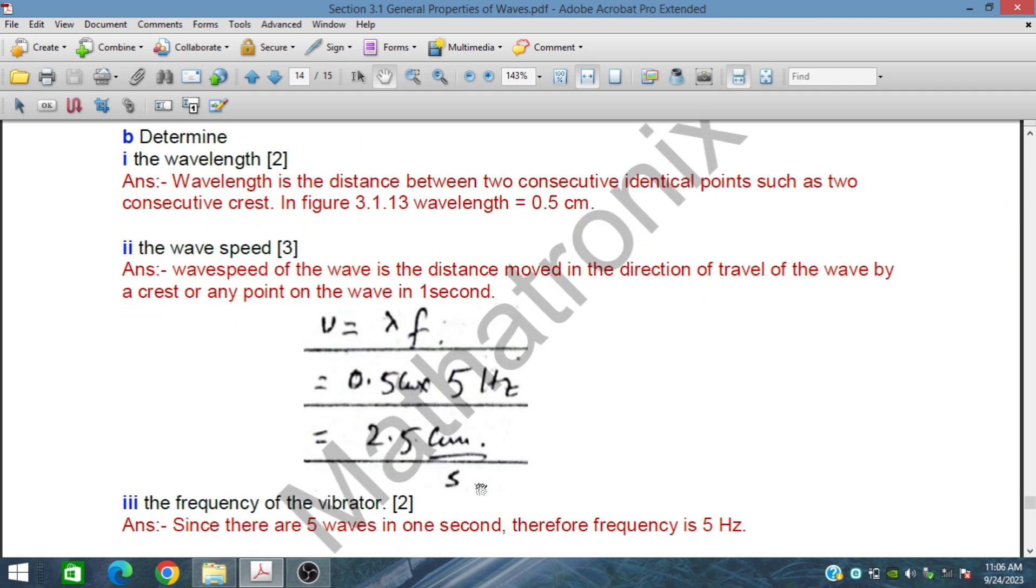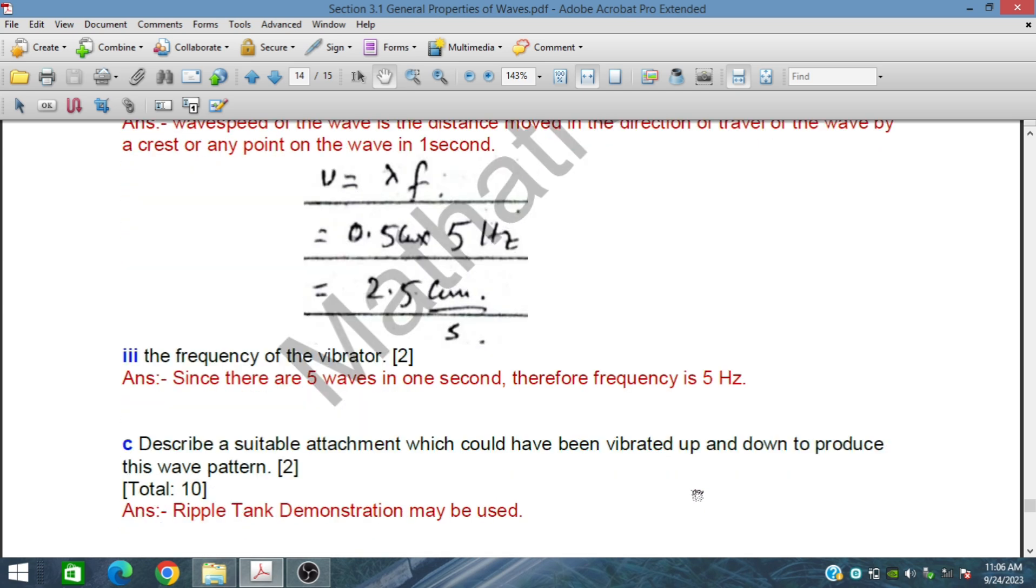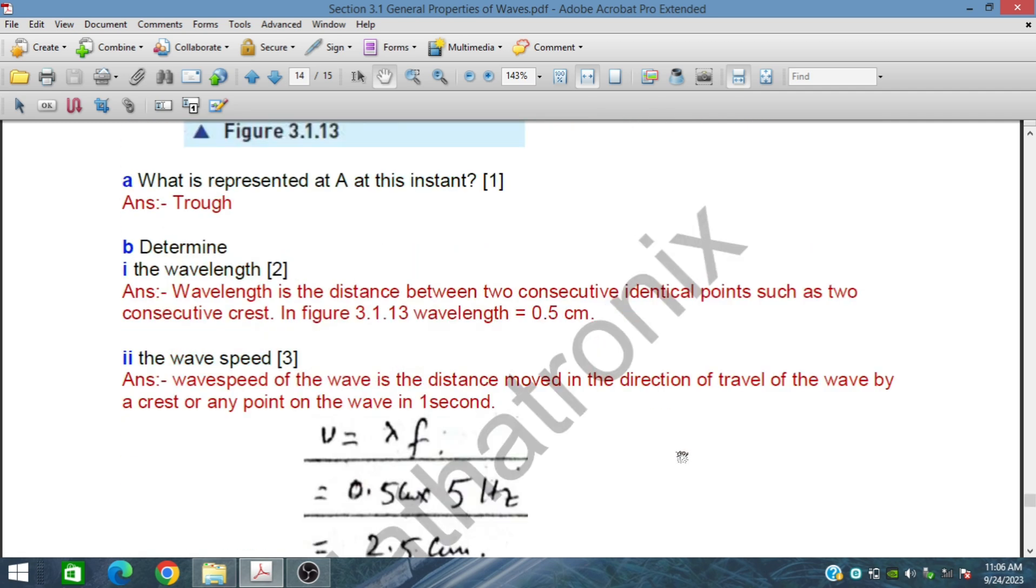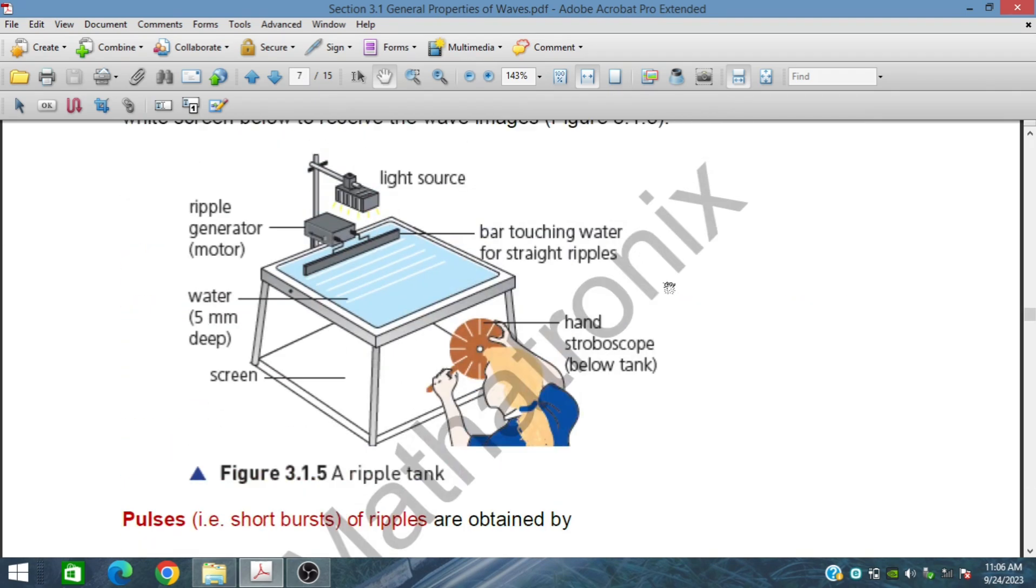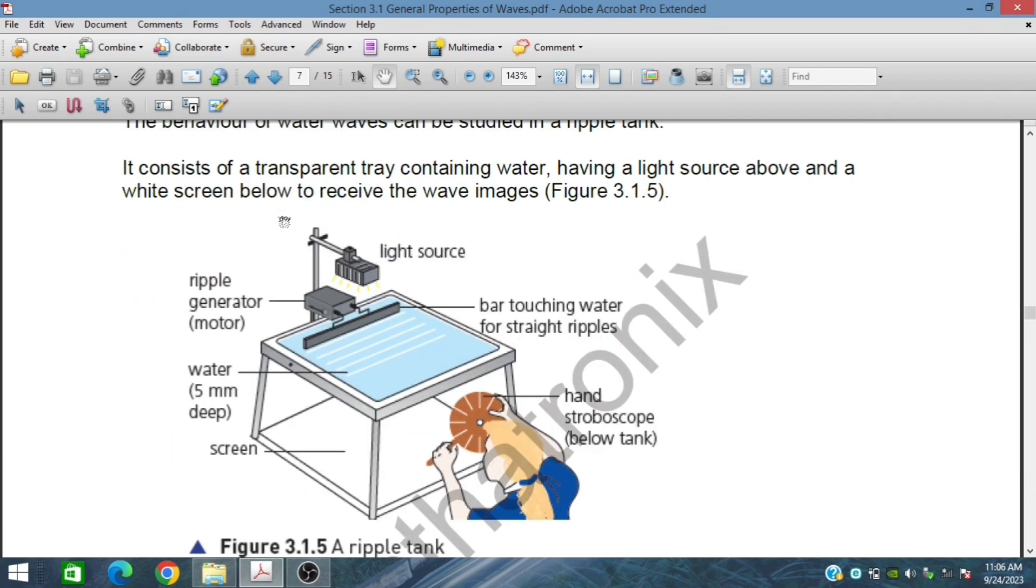This is the wavelength and frequency of the vibrator. Since there are five waves in one second, therefore the frequency is 5 hertz. Part D describes a suitable attachment which could have been vibrated up and down to produce this wave pattern, produced through a ripple tank demonstration setup as discussed earlier.